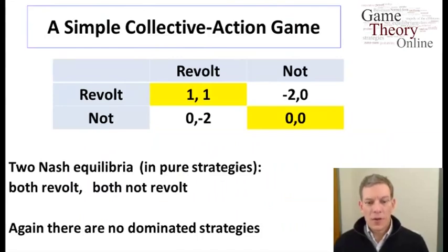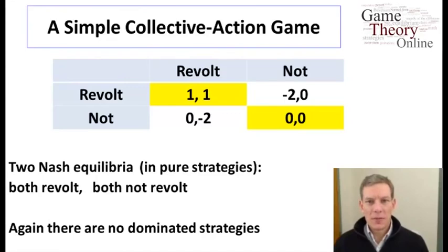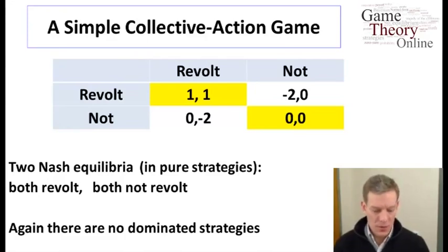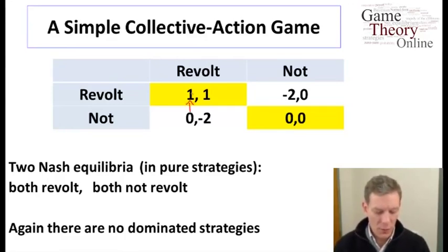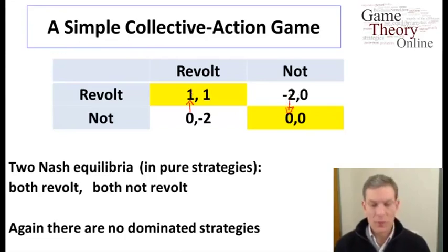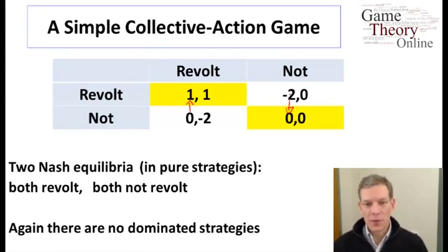Here's a third example — another form of a coordination game, with two equilibria. This is our collective action game discussed earlier, where whether I want to revolt or not depends on what the other player is doing. If the other person revolts, I'd choose to revolt. The column player gets a higher payoff from revolting if the other player revolts. But if the other player chooses not to revolt, they would prefer not to revolt, and there's some risk from revolting if the other player doesn't. You don't want to be the only person showing up at a protest or a revolt.